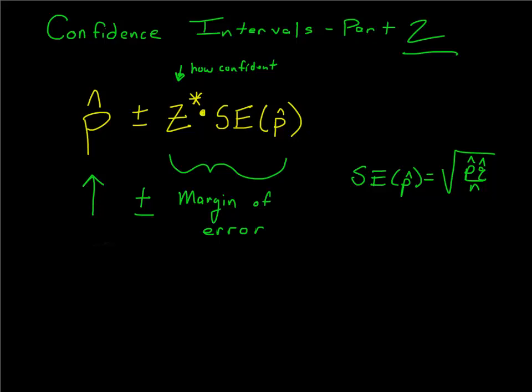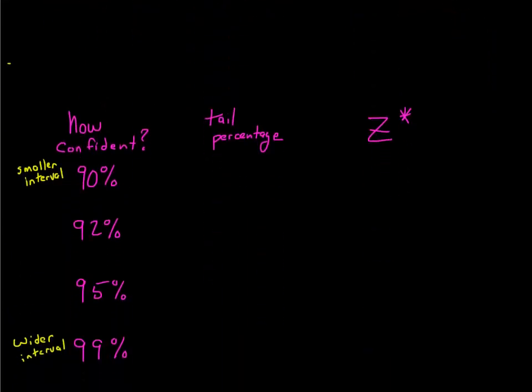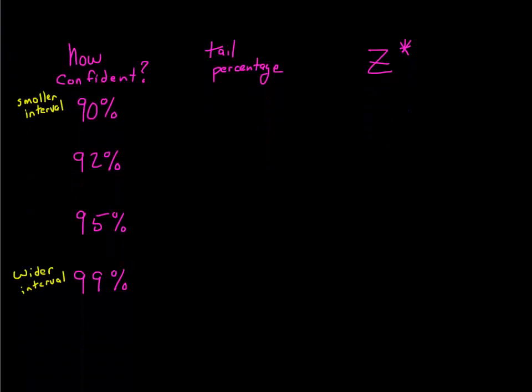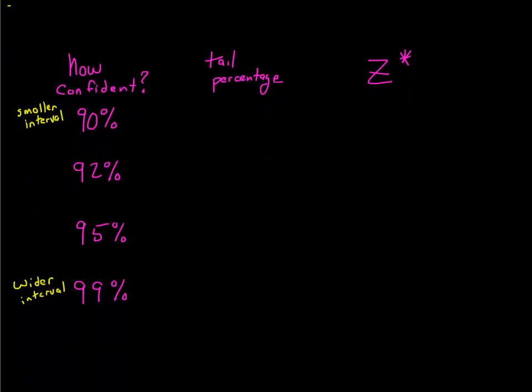You could change your level of confidence, and changing your level of confidence means changing your Z-star score. I've made a little chart to show how this determines how confident we want to be. If you want to be 90% confident, that means a smaller interval — you're going to be less confident. If you wanted to be only 1% confident, that would be a very small interval, whereas 99% confident would be a wide interval.